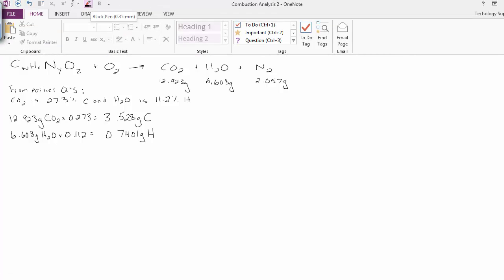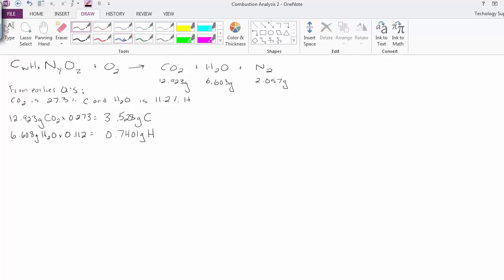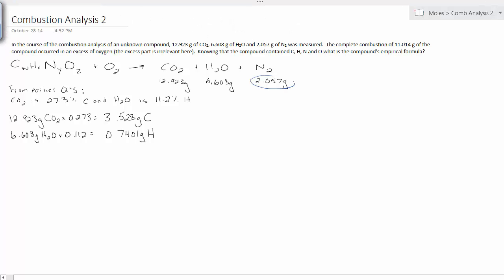Now remember, this 3.5 and the 0.7 grams came from the original 11. But there's this other element, nitrogen, that I need to account for. Look, nitrogen, all of the nitrogen is in N2. I don't need to do percent composition or any type of analysis on it. I know that all 2.057 grams came from the original 11.